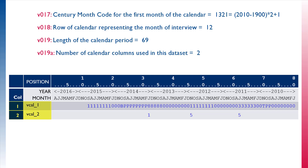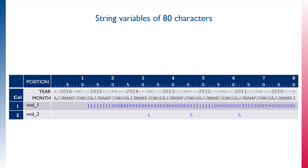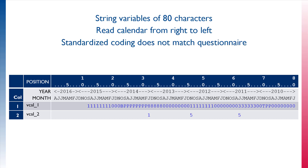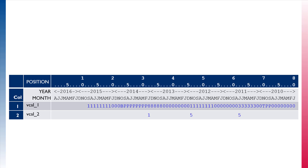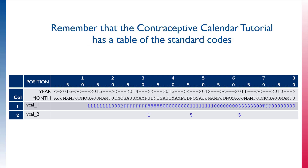Now that we know there are 80 characters in each string variable, that the calendar is read from right to left for chronological order, and that the standardized coding does not match the questionnaire, let's read through this string example to understand the reproductive and contraceptive events that happened in this respondent's calendar period. Remember that the contraceptive calendar tutorial is located on the DHS website — it has a table of the standard codes that we will use to interpret these data.